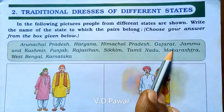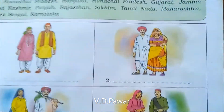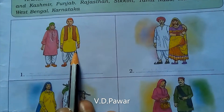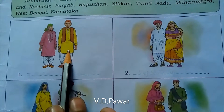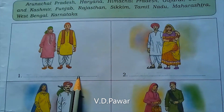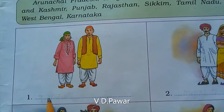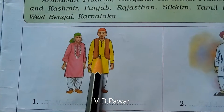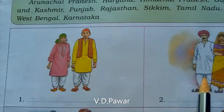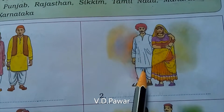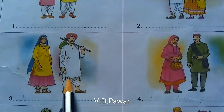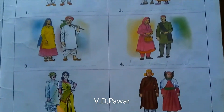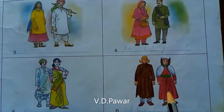Now let us look at the map. We will identify where each state is located. This is Jammu and Kashmir. This is Rajasthan. This is Haryana. This is Himachal Pradesh. This is Gujarat. This is Sikkim.